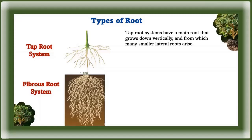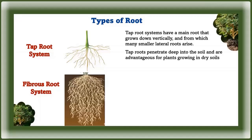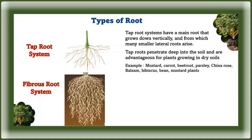Taproot systems have a main root that grows down vertically, from which many smaller lateral roots arise. Tap roots penetrate deep into the soil and are advantageous for plants growing in dry soil. Examples include mustard, carrot, beetroot, parsley, china rose, balsam, hibiscus, bean, and mustard plant.